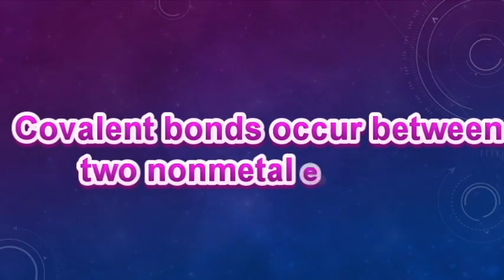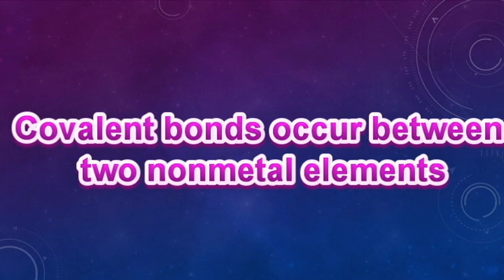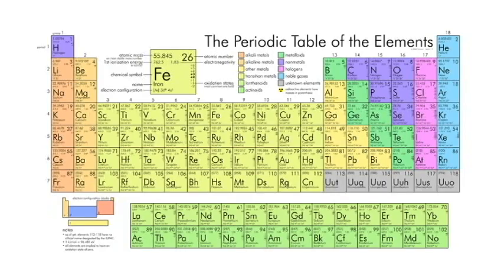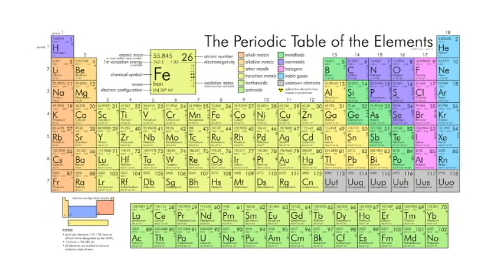Covalent bonds usually occur between two non-metal elements. So if you take a look at the periodic table, the elements in dark blue are non-metals, but non-metals can also include the elements in the purple column in group 17, the halogens.